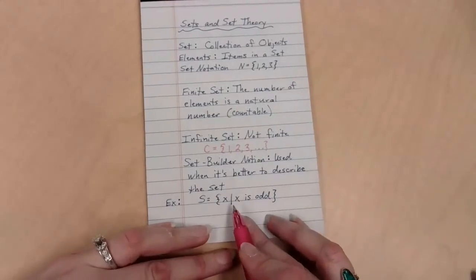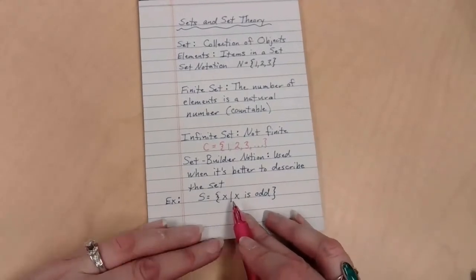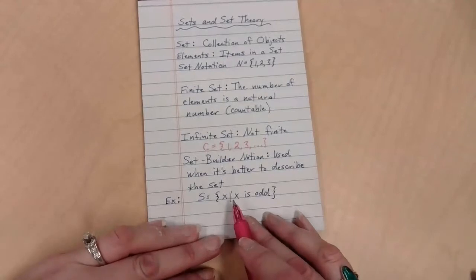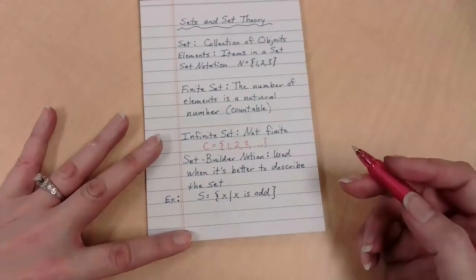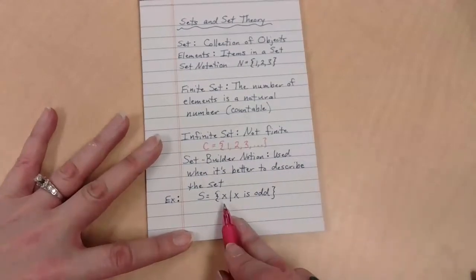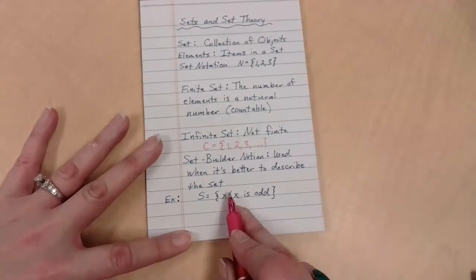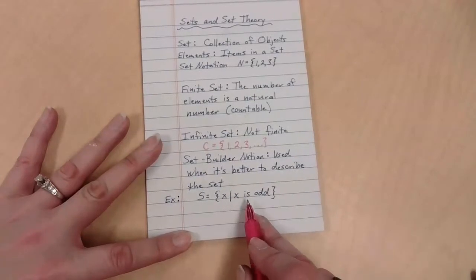Some of you have seen me work with this before. This is a downslash. It's not any operational symbol, but this is the set of numbers x such that x is odd. So rather than trying to find ways to list all of the odd numbers, I say my set of numbers are x's such that, that's the line, such that, x is odd.